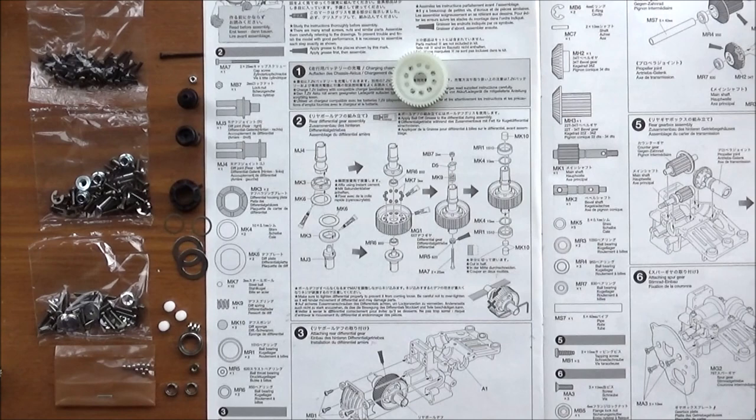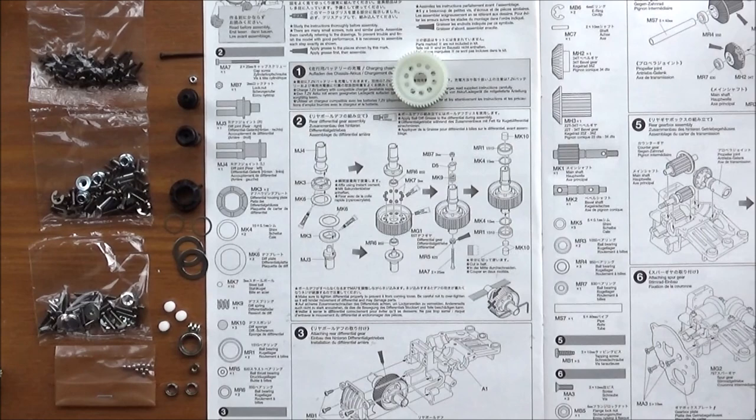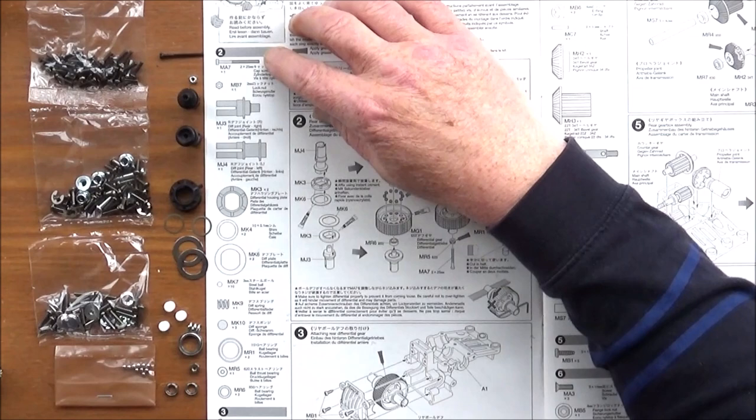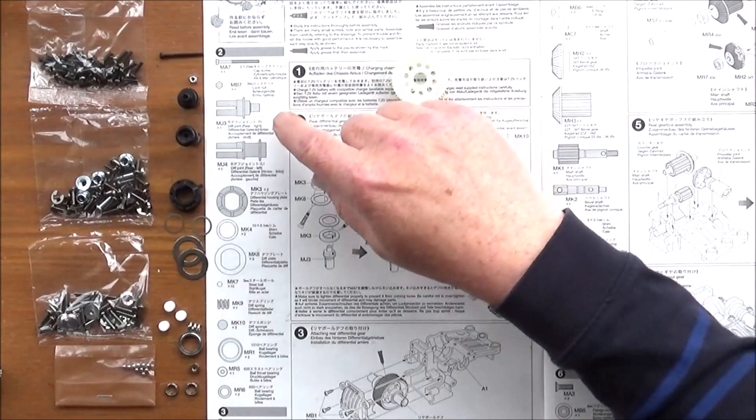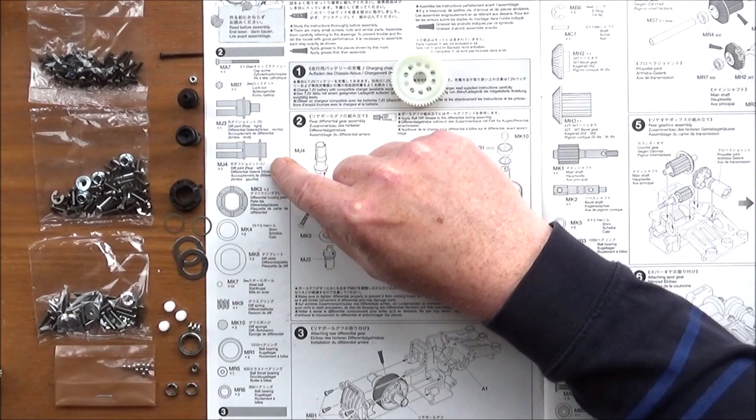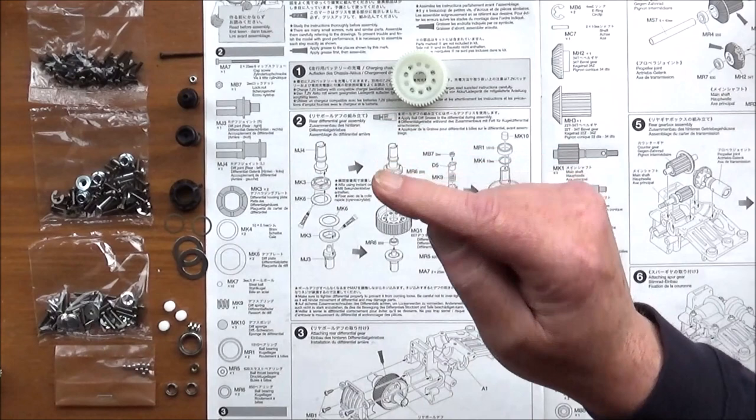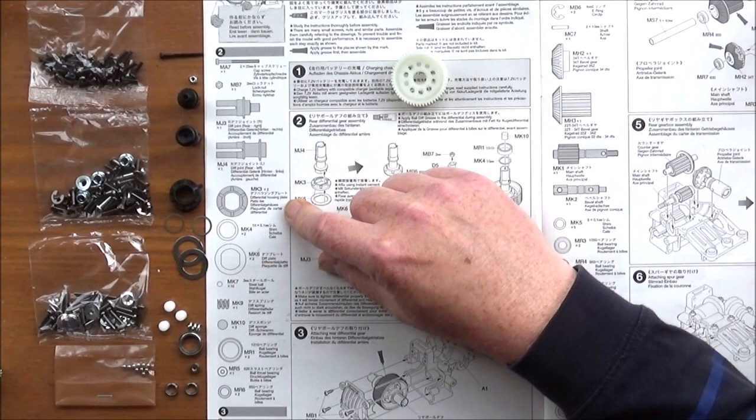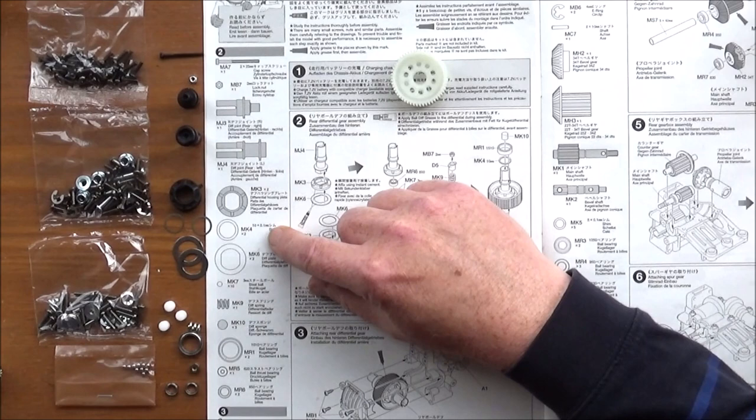Starting off then for step 2, rear differential gear assembly. We've got one off of MA7, 2x25mm cap screw. One off of MB7, 2mm lock nut. One off of MG3, diff joint rear right. MJ4, diff joint rear left. Two off of MK3, differential housing plate. Two off of MK4, which is 10x1mm shim. Two off of MK6, which is differential plates.